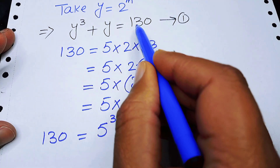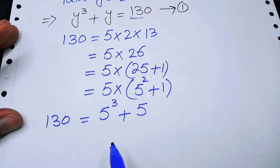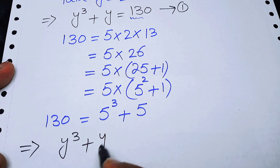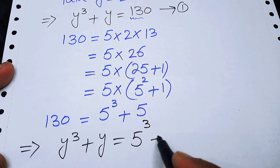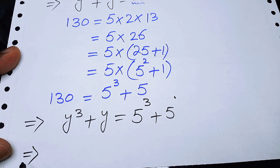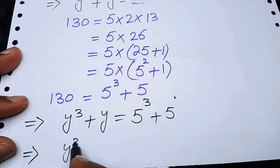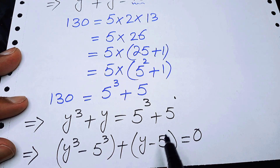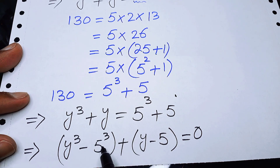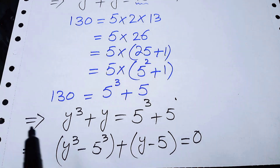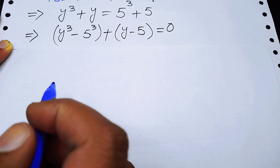We replace 130 with 5 cubed plus 5, giving y cubed plus y equals 5 cubed plus 5. Taking all terms to the left hand side, we get y cubed minus 5 cubed plus y minus 5 equals 0.